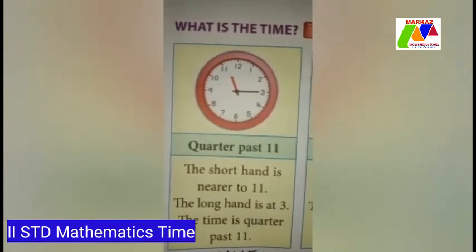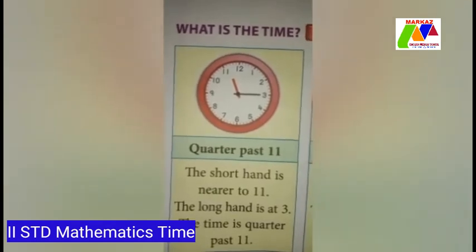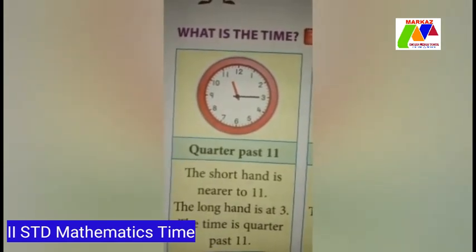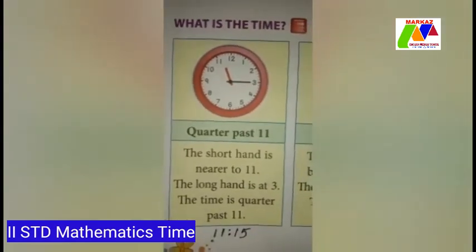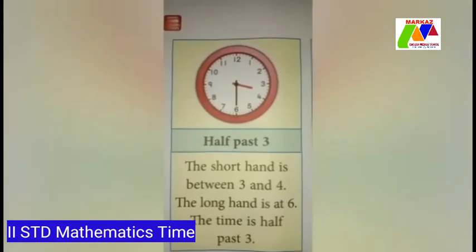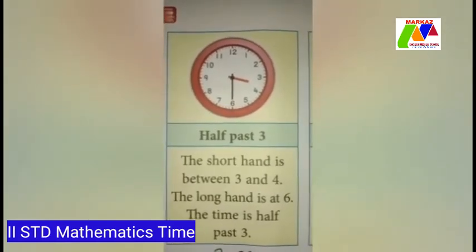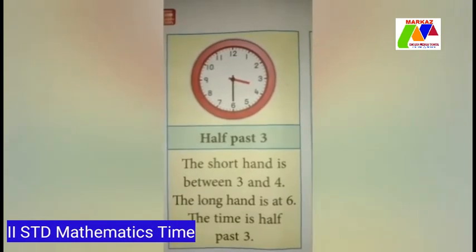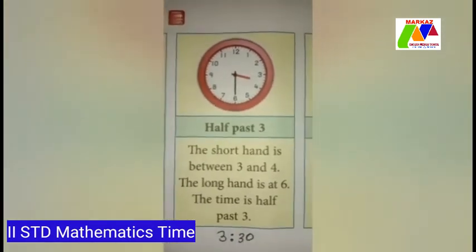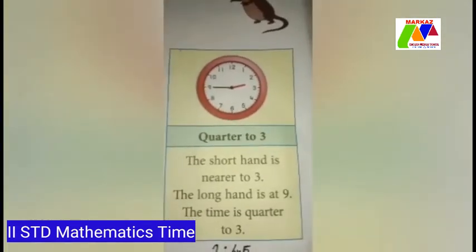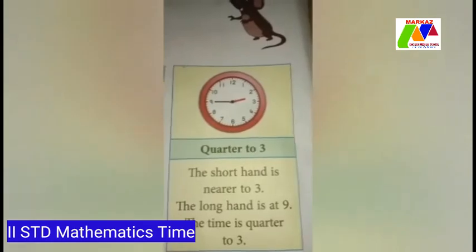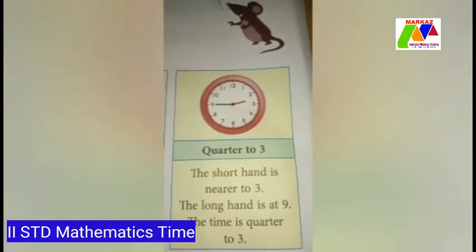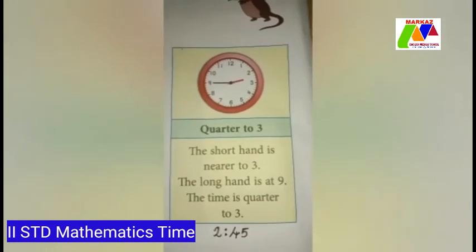In this clock, the short hand is nearer to 11 and the long hand is at 3. The time is quarter past 11. We can write it as 11.15. In this clock, the short hand is between 3 and 4 and the long hand is at 6. The time is half past 3. We can write it as 3.30. In the next clock, the short hand is nearer to 3 and the long hand is at 9. The time is quarter to 3. We can write it as 2.45.